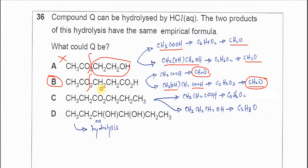C cannot be the answer. If the bond breaks here, it will form propanoic acid C3H6O2, and also the alcohol pentanol. The empirical formulas are different, so C is not the answer.